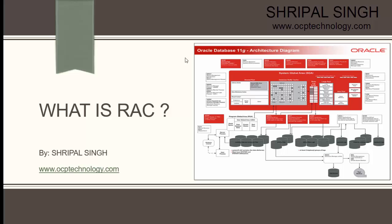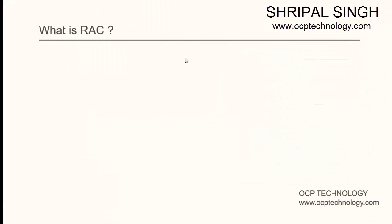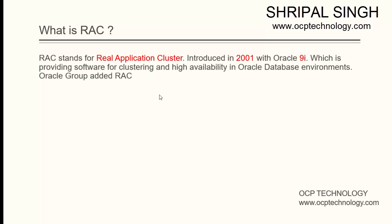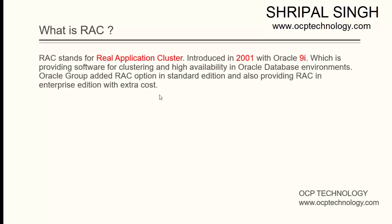So, what is RAC in Oracle, and how to configure it and how to work on it? This is the basic intro of Oracle RAC. RAC stands for Real Application Cluster, introduced in 2001 with Oracle 9i, which provides software for clustering and high availability in the Oracle database environment. Oracle added the RAC option in the Standard Edition and also provides RAC in the Enterprise Edition with extra cost.